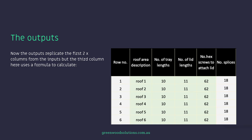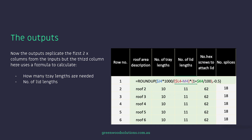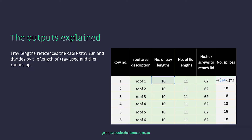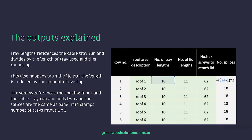The outputs replicate the first two columns from the inputs, but the third column uses a formula to calculate how many tray lengths are needed, the number of lid lengths, hex screws, and splices. Tray lengths references the cable tray run and divides by the length of tray used, then rounds up. This also happens with the lid, but the length is reduced by the amount of overlap. The hex screws reference the spacing input and the cable tray run and adds two, and the splices are the same as mid-clamps — number of trays minus one.